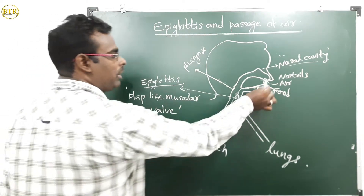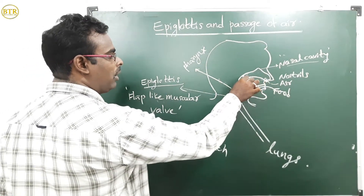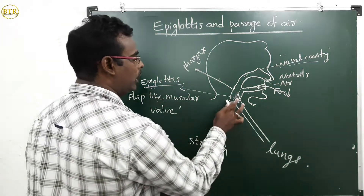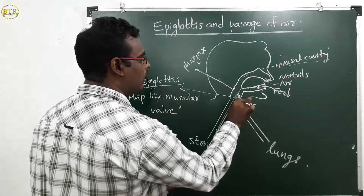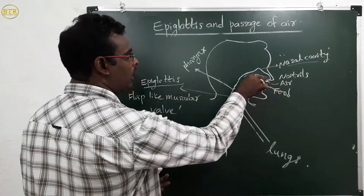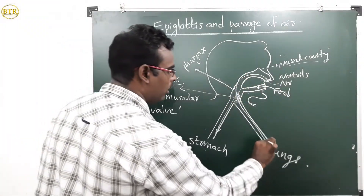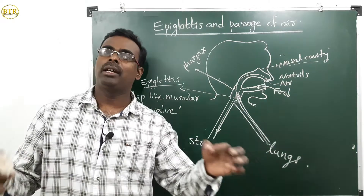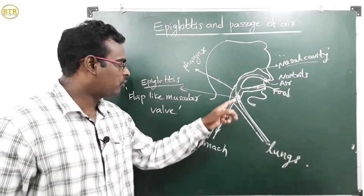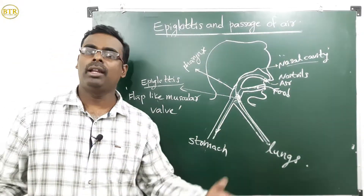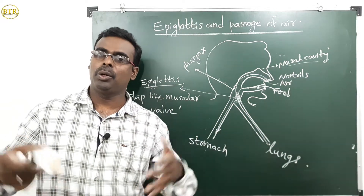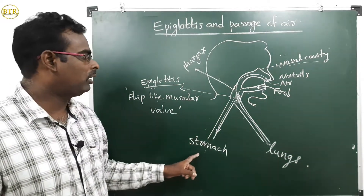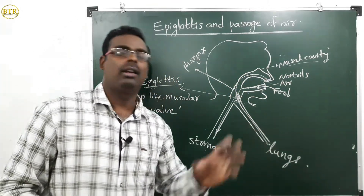When we take air into our body, the epiglottis will be open, and that air reaches the lungs. So epiglottis is controlling the passage of air and food into their respective passages. Due to the presence of epiglottis, food enters into the stomach and air goes into the lungs.